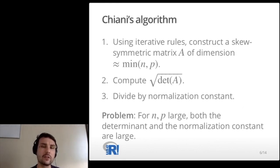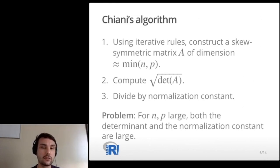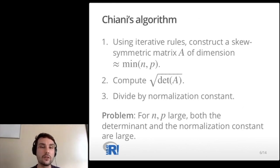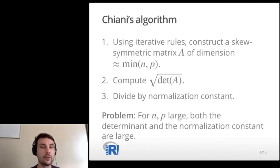This matrix A depends on the value at which we want to compute the CDF. The problem with Kiani's algorithm, even though it's exact, is that when n and p are both large, both the determinant and the normalizing constant are also very large. You end up dividing two large numbers with one another, which can lead to inaccuracies. This was the motivation to look at ways to do arbitrary precision linear algebra, because Kiani implemented his algorithm in Mathematica, but when you try to do the same in R, you run into numerical accuracy problems.